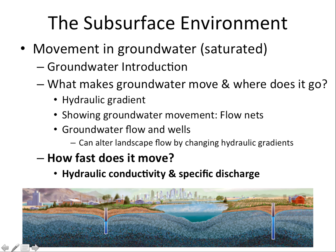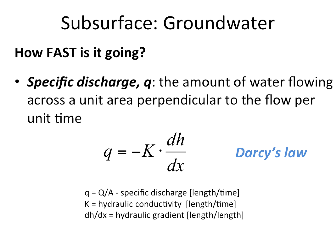Here we're going to finish talking about hydraulic conductivity, its specific discharge, and essentially how fast water moves below ground. We talked about hydraulic conductivity already, and to use it to figure out how fast water is going, we use it to calculate specific discharge, which is abbreviated Q.